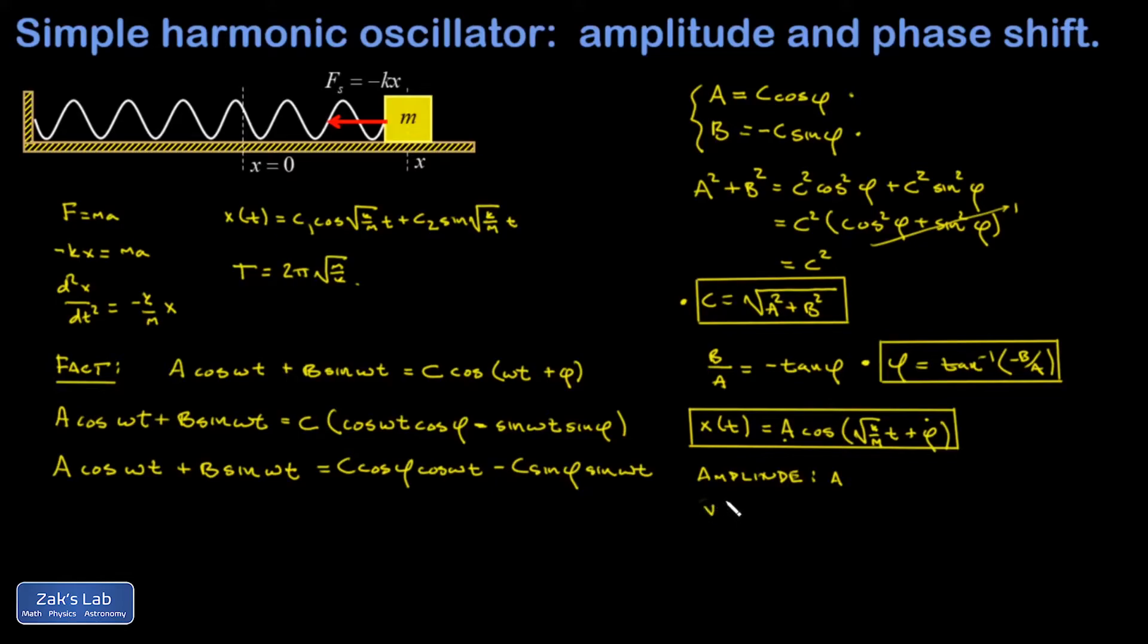Another advantage is, if I look at the velocity function, I just take a time derivative and get negative A root k over m sine root k over m t plus φ, and I can immediately tell what the maximum speed is. It's just the amplitude of this single sine function. And that's a formula you might recognize from your earlier studies.